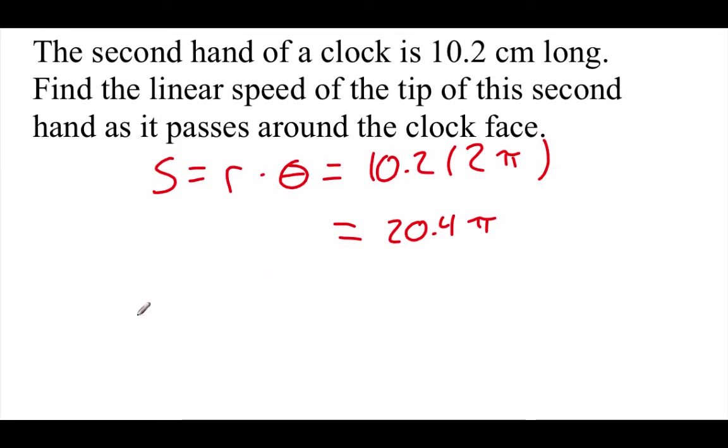Now, using our linear speed formula, that's the one that said v equals s over t. Well, we just found our s value. It's 20.4 pi. As far as the time, well, in order for a second hand to make one full trip around a clock, it's going to take us 60 seconds.